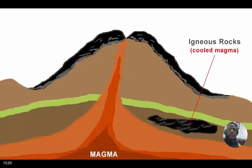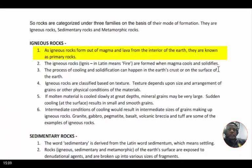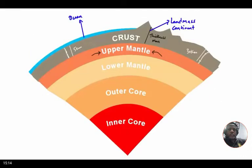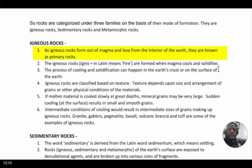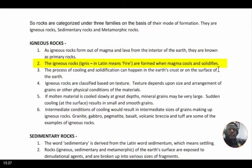Igneous rocks are formed out of magma and lava from the interior of the earth. Magma is also called molten rock and is found in the mantle of the earth. When magma comes out of the surface it cools down and becomes solid — that's how igneous rocks are born. Igneous rock is also known as primary rock because it is formed from magma — anything formed right from the core ingredient of the earth is called primary rock. The word igneous is derived from the Latin word meaning fire.